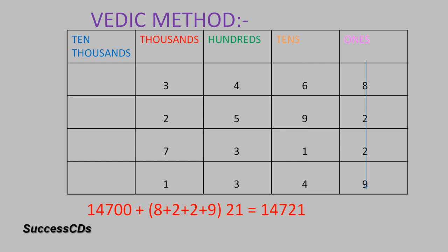8, 9, 2, 2 gives you 21. So 14,700 plus 21 gives you the answer: 14,721.